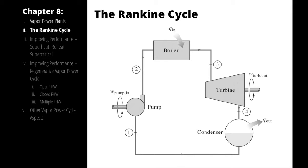An assumption we're going to establish with our Rankine cycle, unlike our Brayton cycle, is that the outlet of our condenser is a freshly condensed substance. In a simple cycle, we assume that the outlet of the condenser and inlet to the pump is a saturated liquid. It's a waste of effort to try to sub-cool it — it just goes across the dome and then enters the pump.